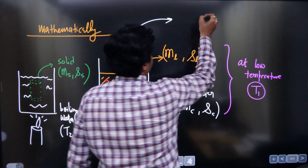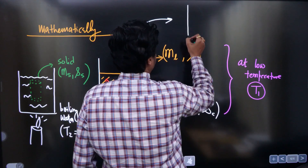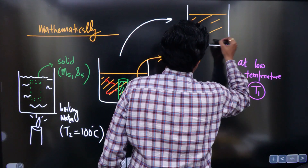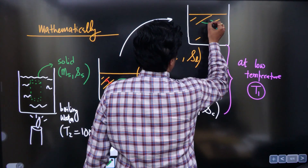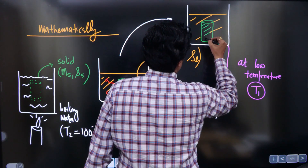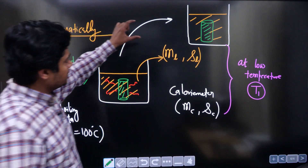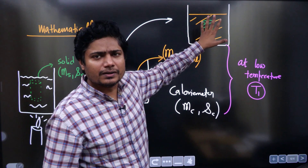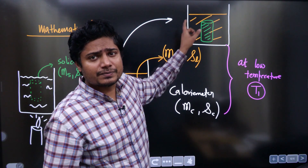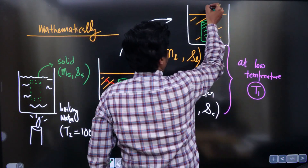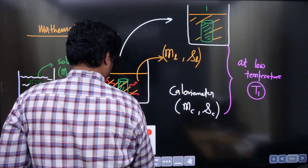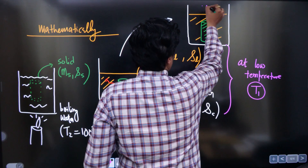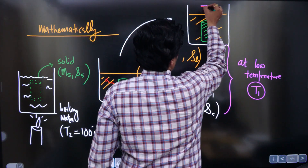After some time, the liquid will attain a final temperature T_mixture. The solid, which was at a very high temperature of 100 degrees, will cool down a little bit because it releases energy. That energy is absorbed by the liquid, so the final temperature T_mixture is observed. There are three things: the calorimeter, the solid, and the liquid — each with their own specific heats.